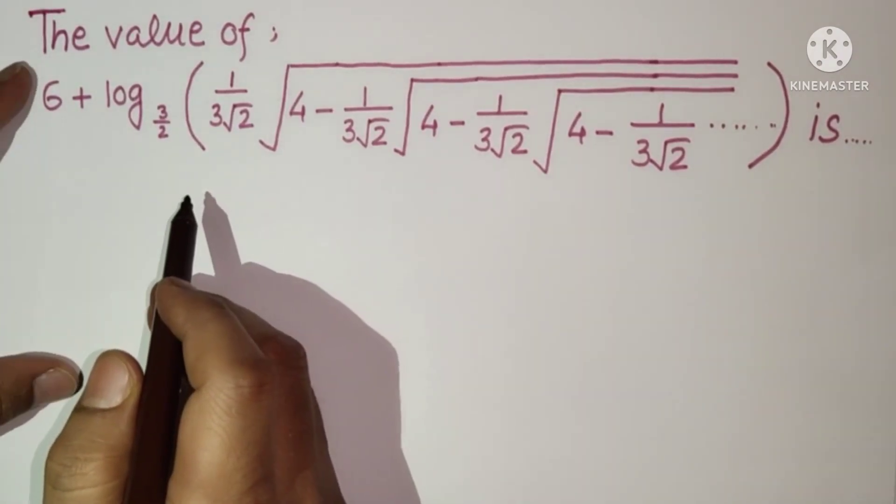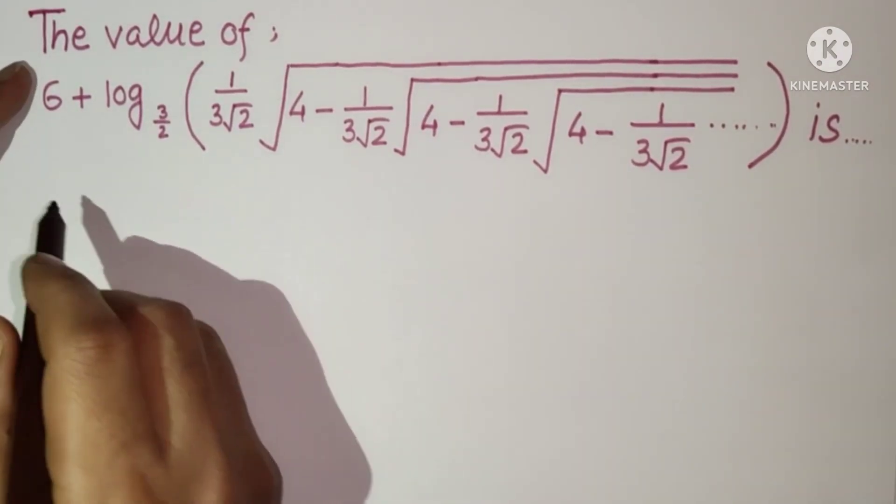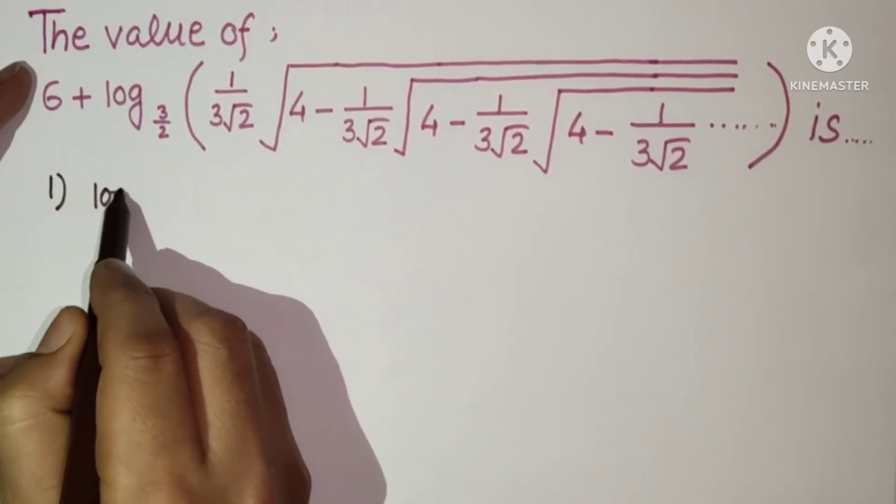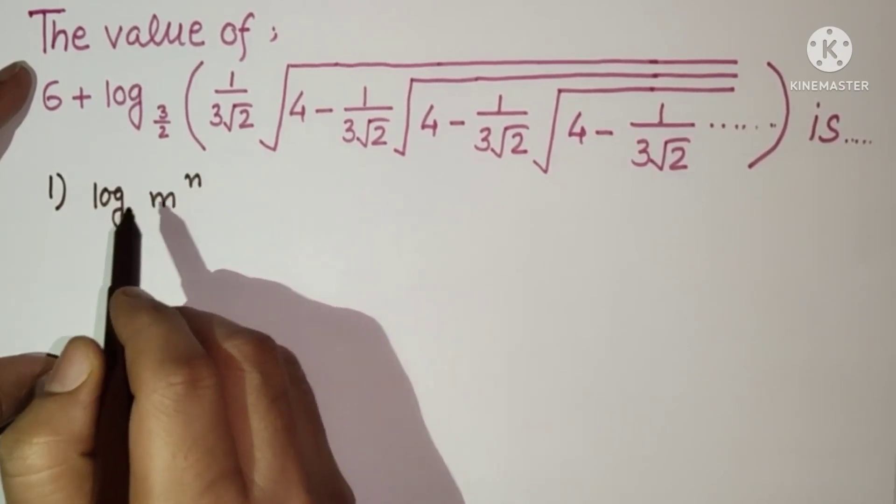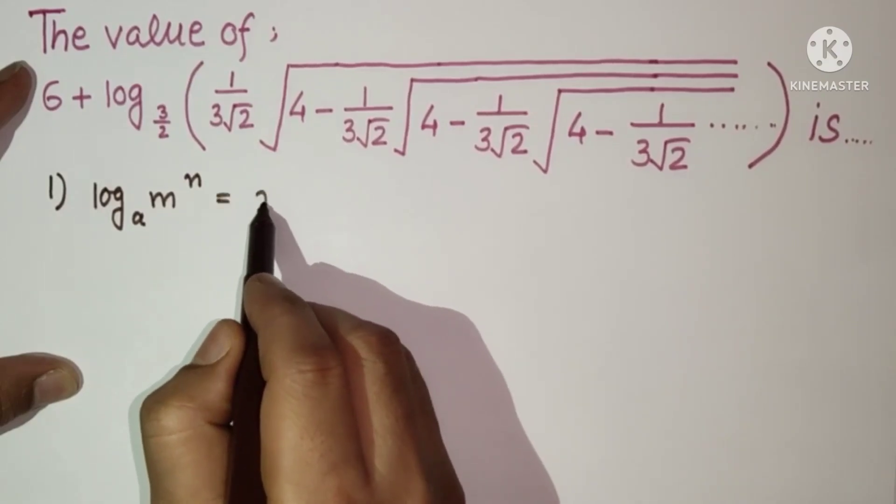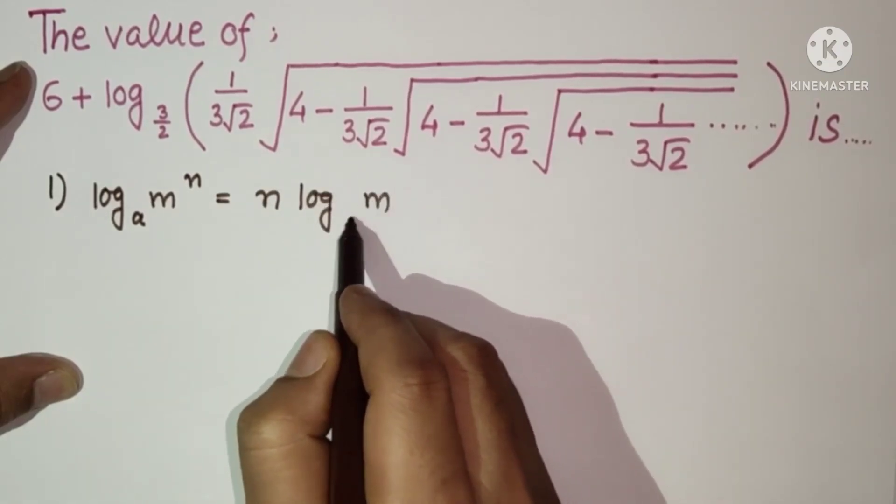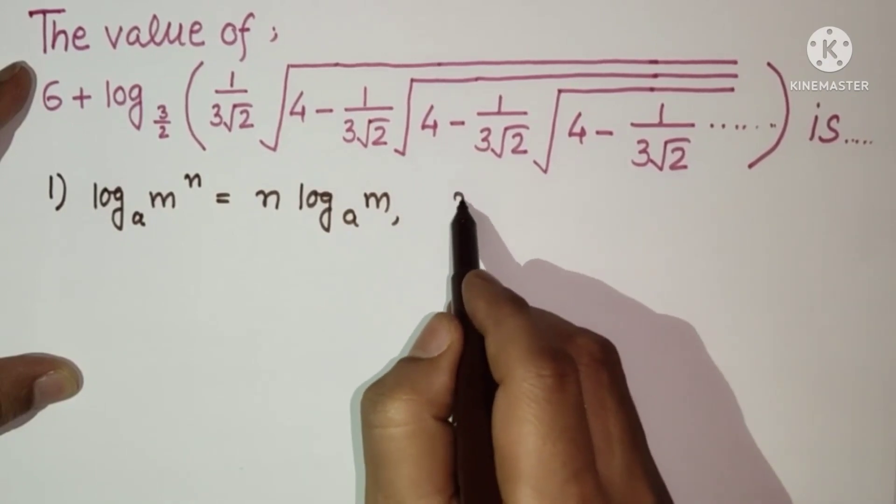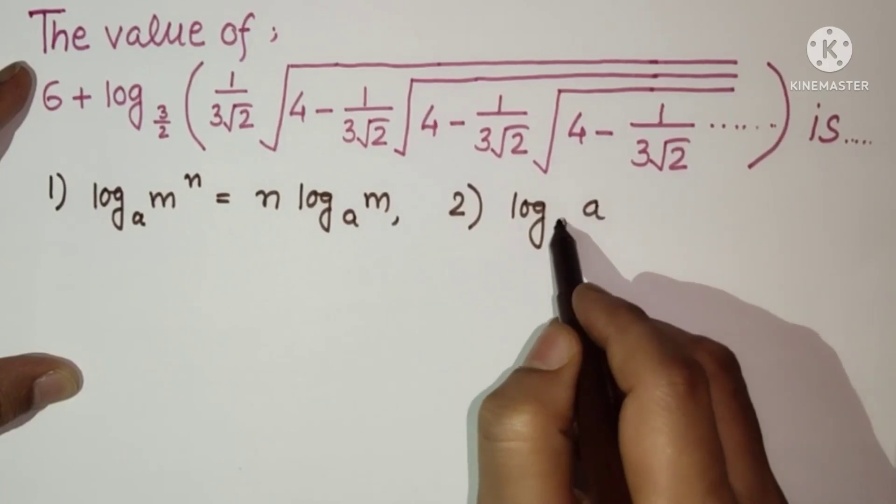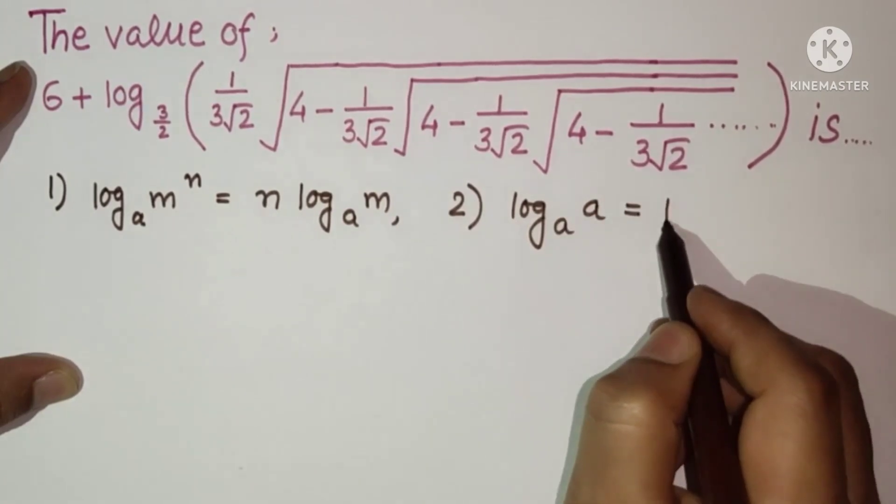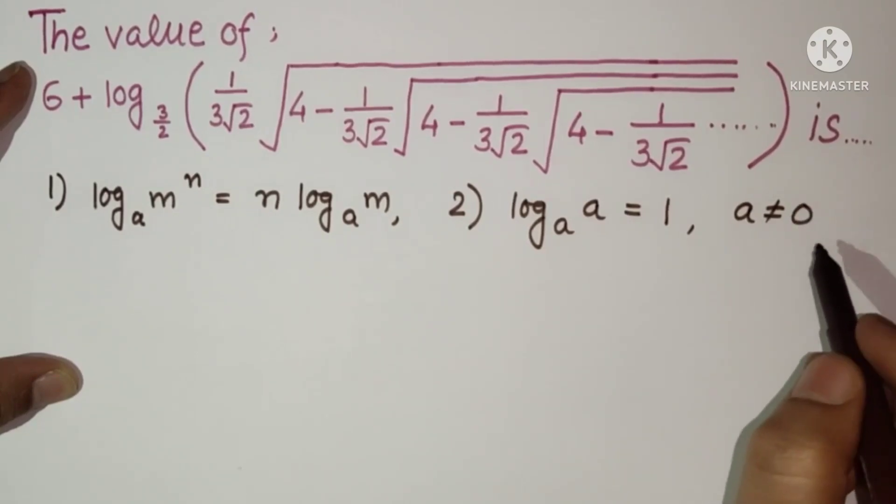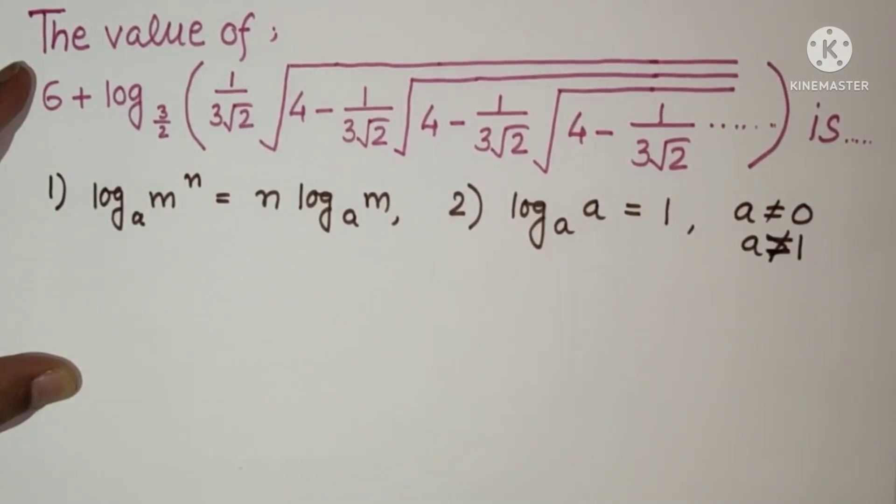Before solving this question, we have to discuss some logarithmic properties. Property number 1: log m raised to the power n to the base a will be n log m to the base a. Property 2: log a to the base a will be 1, where a should not be 0 and should not be negative. a should not be 0 and a should not be 1.